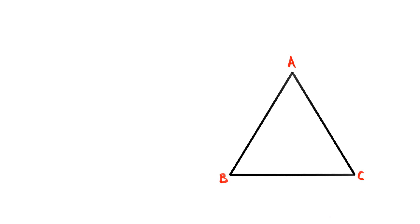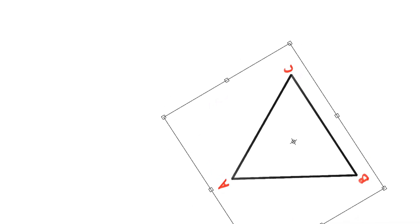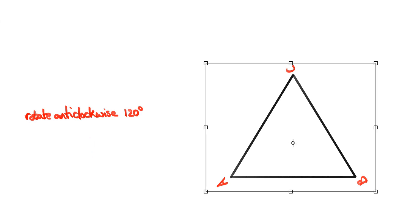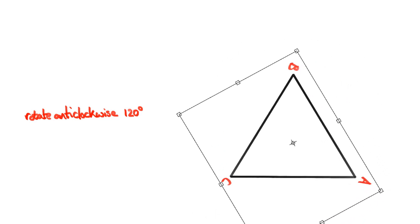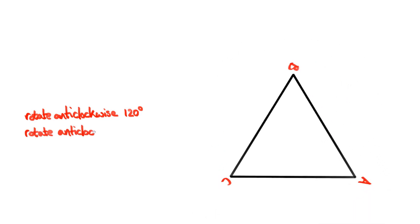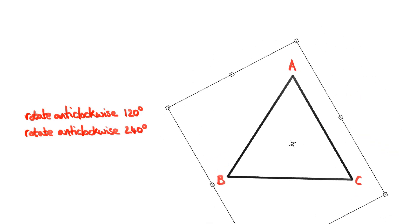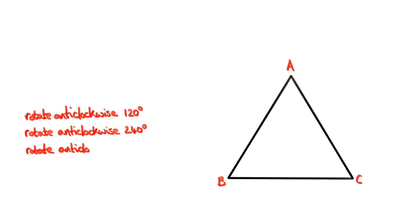So what are the symmetries of an equilateral triangle? The first symmetry is a rotational symmetry — a transformation that rotates the triangle anticlockwise by 120 degrees. Let's list this in our list of symmetries. Then we can rotate the triangle 120 degrees more, giving us a rotation by 240 degrees — we're just rotating it once more by 120 degrees.